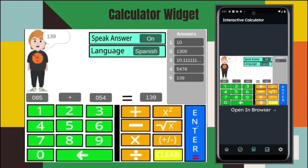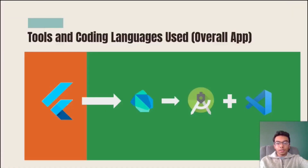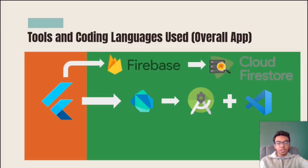The entirety of Achilles Math was coded using the Flutter UI framework and Dart code, along with Android Studio and Microsoft Visual Studio. Firebase was used for user authentication, as well as Firestore to store user data for user customization.